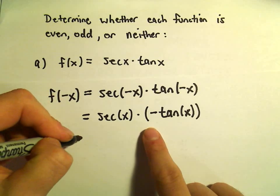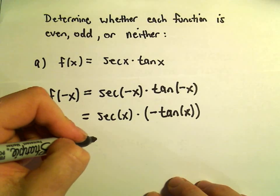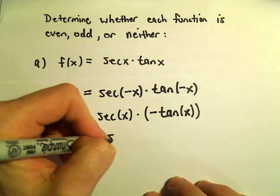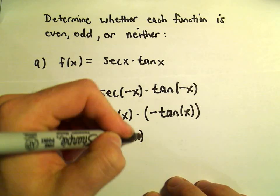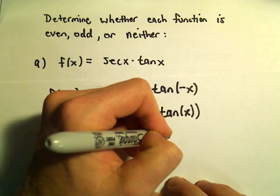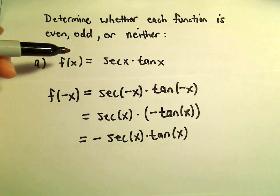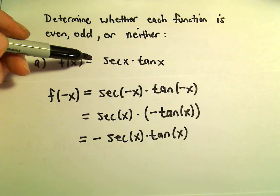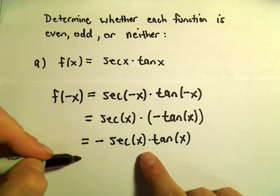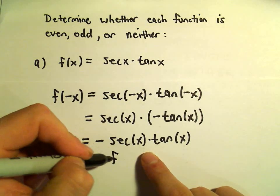Everything's just being multiplied. You can pull the negative back out front. So we have negative secant x times tangent of x. Well, the very original function was secant x times tangent x, so really we have the negative of that function.